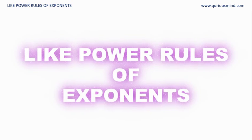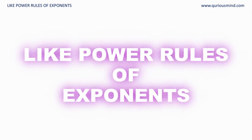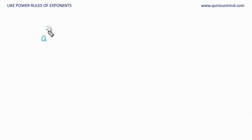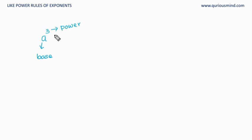Hello everyone. In our last video we saw the base rules of exponents which can be used for multiplication and division of exponents. In this video we will see the power rules of exponents. We know what base and power are — if we have a raised to 3, then a is the base and 3 is the exponent or power. Now we are going to look at what happens when we have like powers.